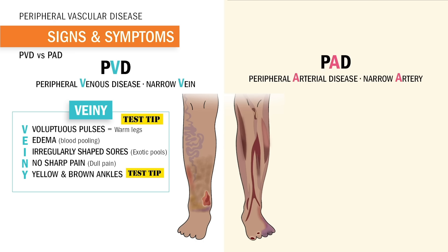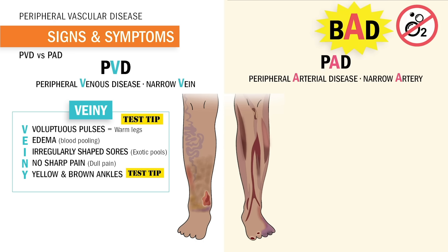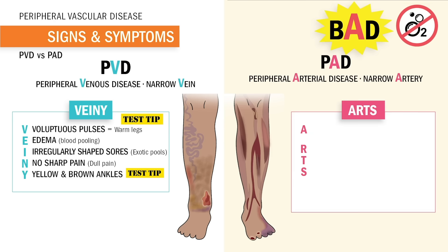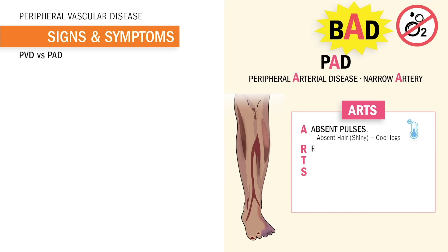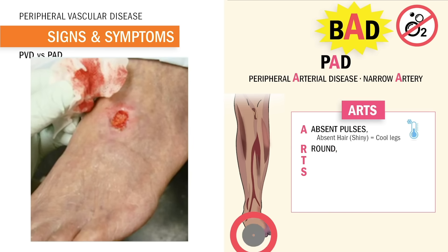PAD — think BAD, because it's bad due to low oxygen in the arteries. Use the acronym ARTS. A is for absence of pulse and absence of hair, so we have shiny, cold legs — imagine never having to shave those legs again. R is for round, red, smooth sores, unlike those exotic irregular shapes in PVD. In PAD we have red sores, also called rubor — remember R for red. T is for toes and feet that are pale from low oxygen, or in advanced stages, black toes called eschar.